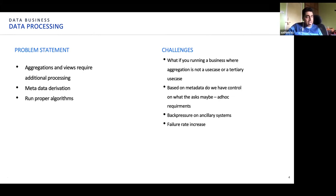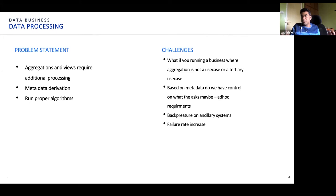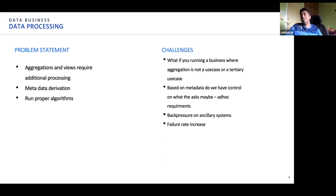In cases where there is a genuine issue for you as a data provider — that you won't be able to honor an ask at all — what is your protection and whom do you go to? This is a gap I see that is not addressed in the NPD. Can the provider say it is not possible to give this, whatever the price, because it is simply not within reach to create that data set? That is another thing — based on the metadata, do we have control over what the ask might be?